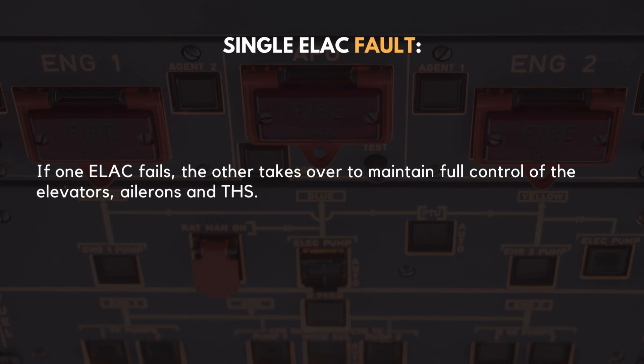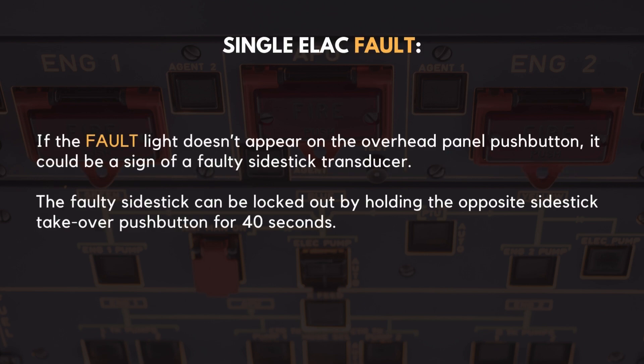If one ELAC fails, the other takes over to maintain full control of the elevators, ailerons, and THS. If the fault light doesn't appear on the overhead panel pushbutton, it could be a sign of a faulty sidestick transducer. The faulty sidestick can be locked out by holding the opposite sidestick takeover pushbutton for 40 seconds.